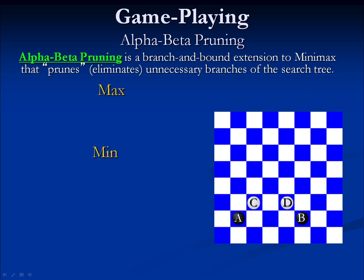The first approach we're going to talk about is what we call alpha-beta pruning. Alpha-beta pruning is a branch and bound extension to minimax. What that means is that we branch out and then we place limitations, we place bounds on the tree as it grows. We prune the branches that we consider unnecessary, and we're going to be able to determine mathematically that some branches cannot yield a better result than we can already achieve by other means.